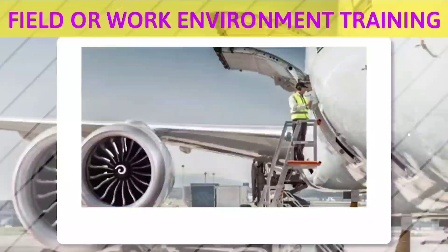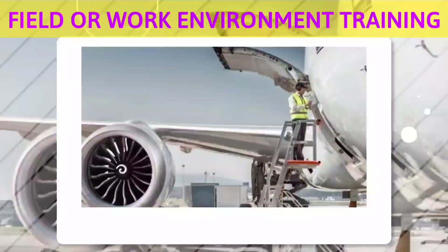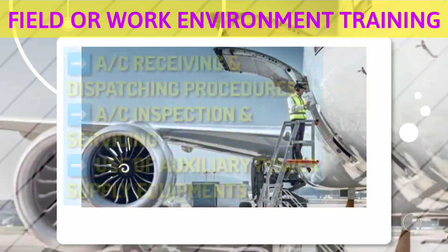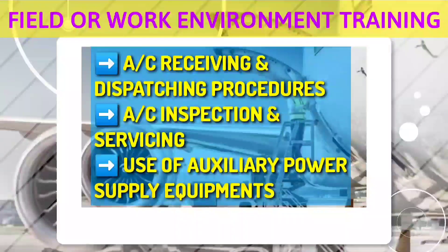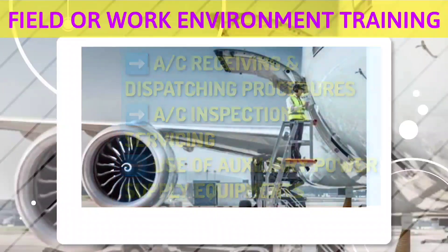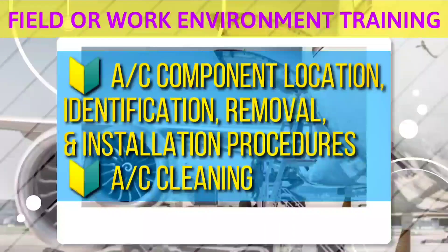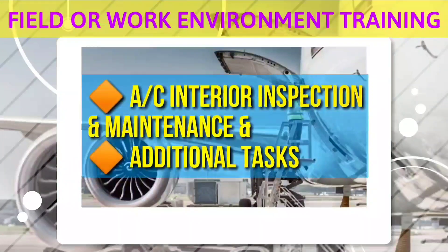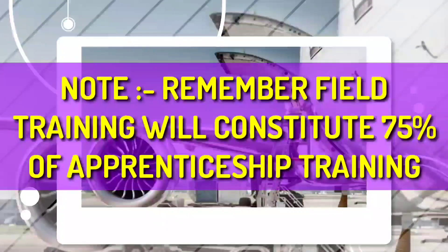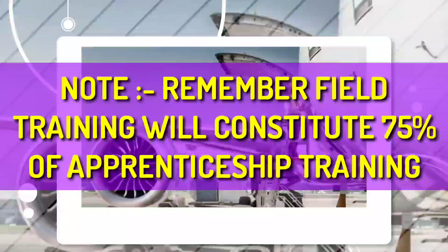Field or work environment training is mandatory and must be carried out under supervision of permanent staff. It will include use of general and special tools, use of PPE, maintenance precautions, understanding of frame marking and arrangements, aircraft receiving and dispatching procedures, aircraft inspection, servicing, use of auxiliary power equipment such as GPU, air conditioning cart, hydraulic cart, aircraft component location, identification, removal and installation procedures, aircraft cleaning, aircraft interior inspection and maintenance, and additional tasks as per organizational capabilities. The field training will constitute 75% of apprenticeship training — so if it's 1 year, then 9 months will be field training and 3 months will be classroom training.